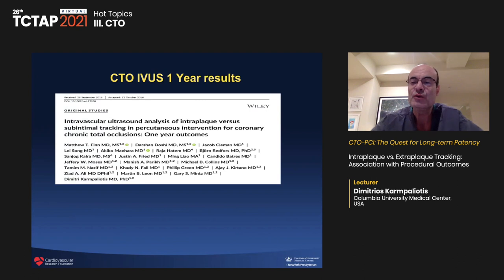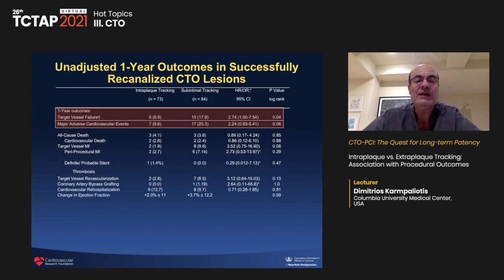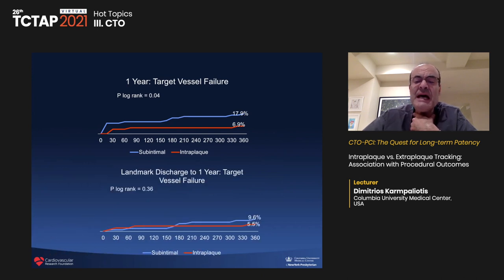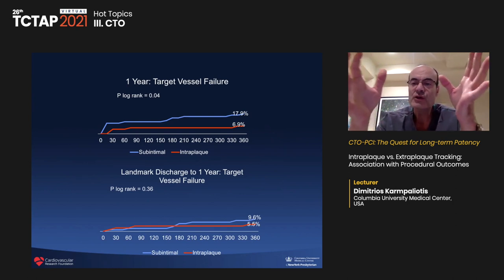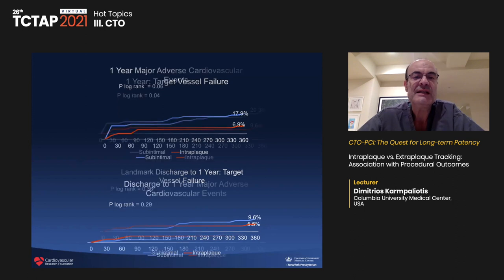We then extended the study and followed patients for one year to evaluate long-term outcomes of subintimal tracking. At one year, target vessel failure was higher in the subintimal group compared to intraplaque. However, in a landmark analysis — excluding patients who had in-hospital events and following only those discharged without complications — there was no statistically significant difference, though the numbers were small and a trend was present.